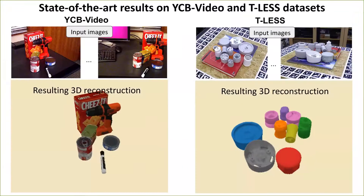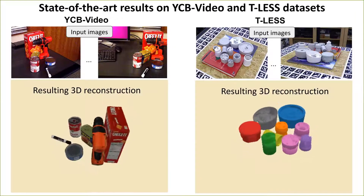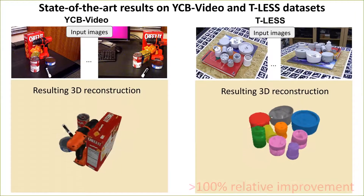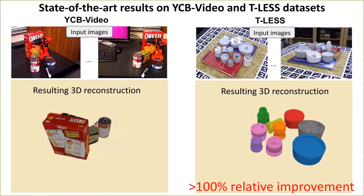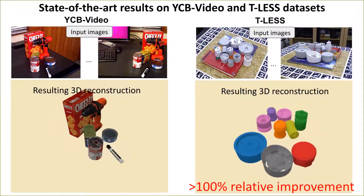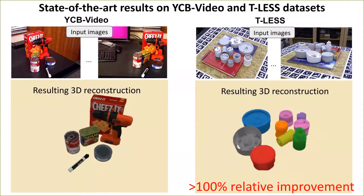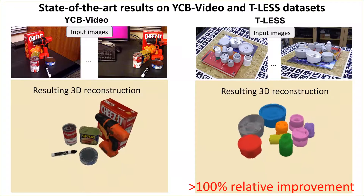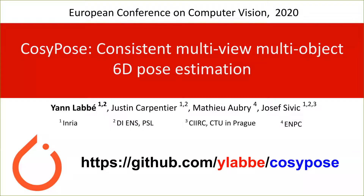Our method significantly improves state-of-the-art results on the YCB video and TLS datasets. It handles scenes with symmetric and texture-less objects and is robust to clutter, occlusions, and detection errors. The code is open source and available online.